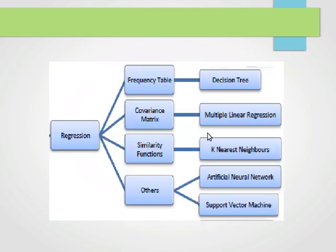Now in terms of our roadmap, we have covered regression techniques based on the frequency table which is the decision tree. We've covered the multiple linear regression which is based on the covariance metrics and now we're doing the one based on similarity functions which is the k-nearest neighbors.